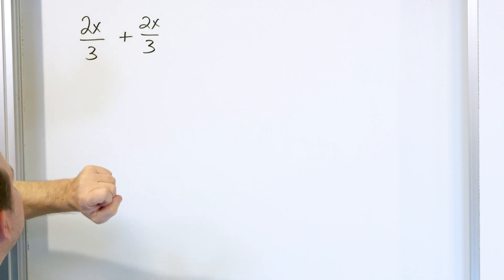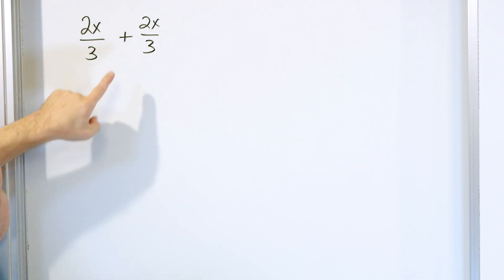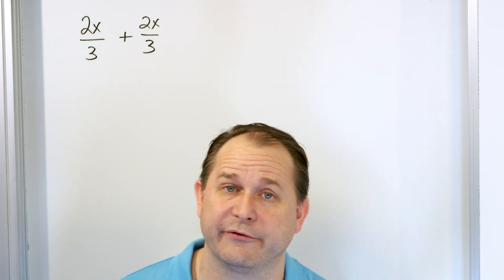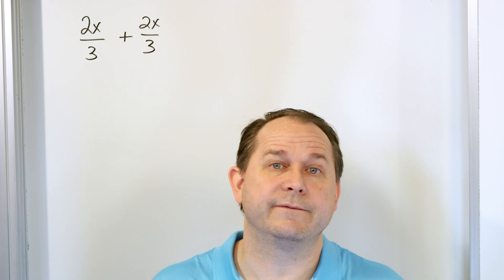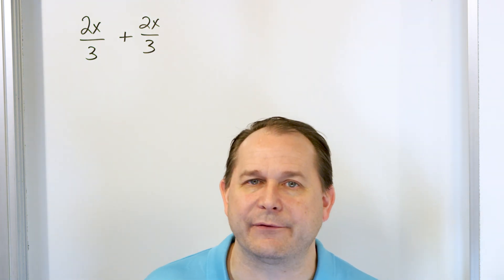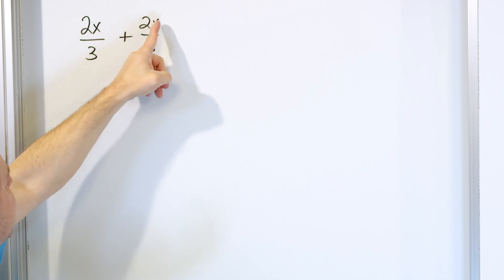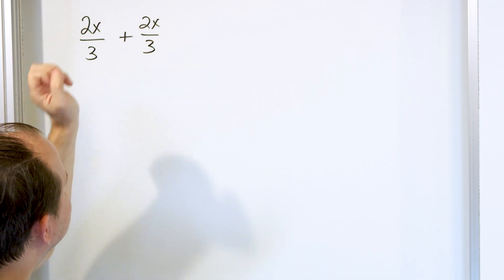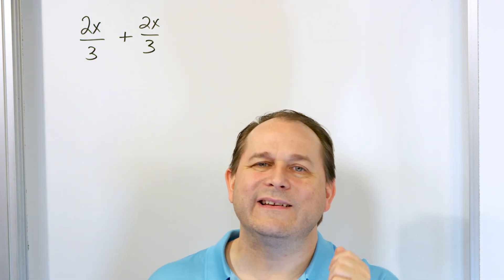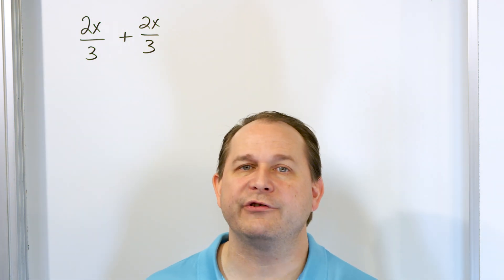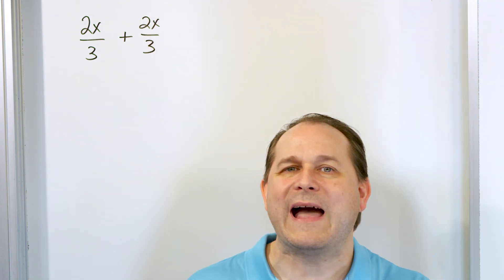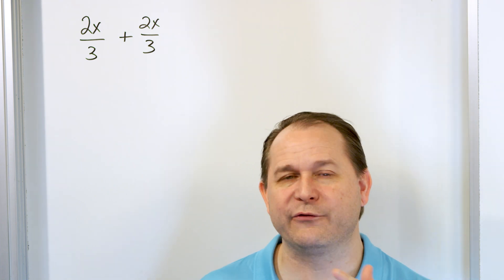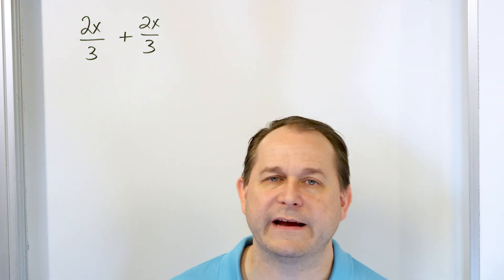But if x is five, then this becomes ten-thirds plus ten-thirds, because two times five is ten — and we know how to add those. X can also be negative numbers — negative one, negative ten, negative one-half. Whatever value we put for x, we get some fraction and we add it to some fraction. So don't get scared by seeing letters in your fractions. They're just placeholders. The rules of adding, subtracting, multiplying, and dividing fractions all follow the same rules you already know.